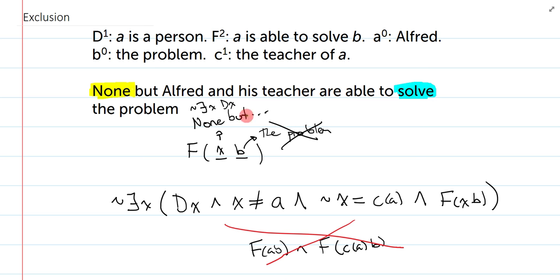It is possible for me to say, none but Alfred and his teacher are able to solve the problem, and then I could say, and even they can't solve the problem, which is just a fancy way of saying, no one can solve the problem. And, that's actually compatible. So, when you symbolize an exclusionary case like this, you do not add in the assertion of the positive case for the individuals. Why? Because the exclusionary case is much more speaking about, in this case, the problem and the solving, and not so much about Alfred and his teacher.